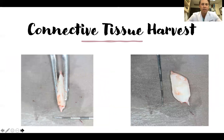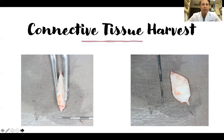For connective tissue harvesting, in this case we're doing the procedure twofold. We're harvesting connective tissue from the tuberosity, which will be laid down first prior to coronally repositioning our flap. Tuberosity tissue is more fibrous, so it holds up better — giving us thick, bound-down, dense tissue while also decreasing post-operative discomfort. This makes it a good harvest site when dealing with limited sites for soft tissue grafting.